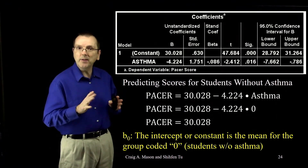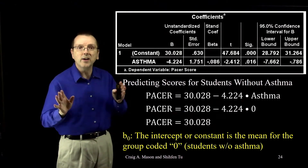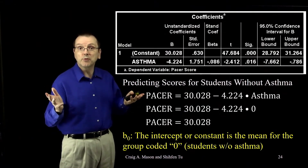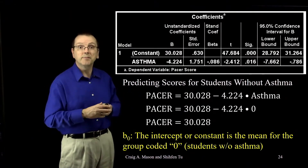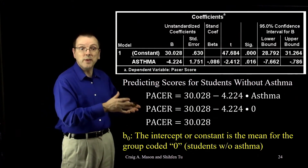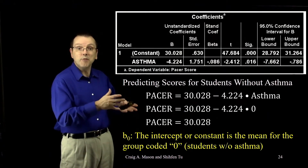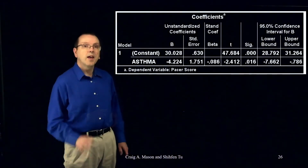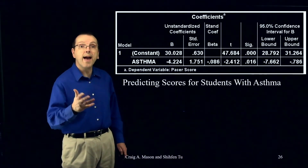If I knew nothing else other than which group someone is in, what score would I predict for people in that group? I'd predict the group mean. And notice the regression equation for the students without asthma does accurately predict the group mean for those students. Now let's solve the regression equation for students who have asthma.